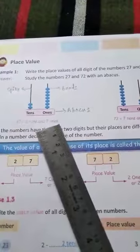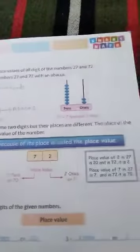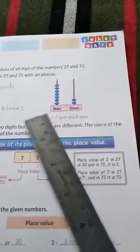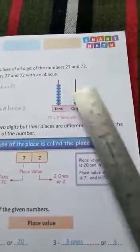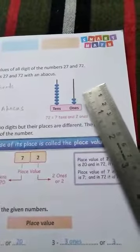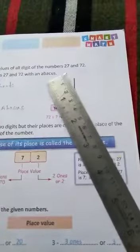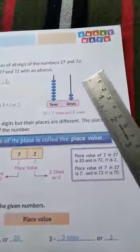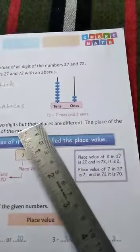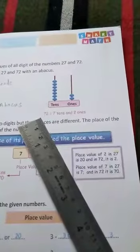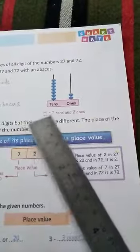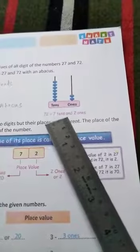The number is 27, that is equal to 2 tens and 7 ones. Okay children, then come to second example. Here ones place is there, tens place is there, circles — means beads — are also there. In ones place, how many beads are there children? 2 beads. And in tens place, how many beads are there children? 7 beads. Then in ones place we write 2 and in tens place we write 7. The number is 72, that is equal to 7 tens and 2 ones.